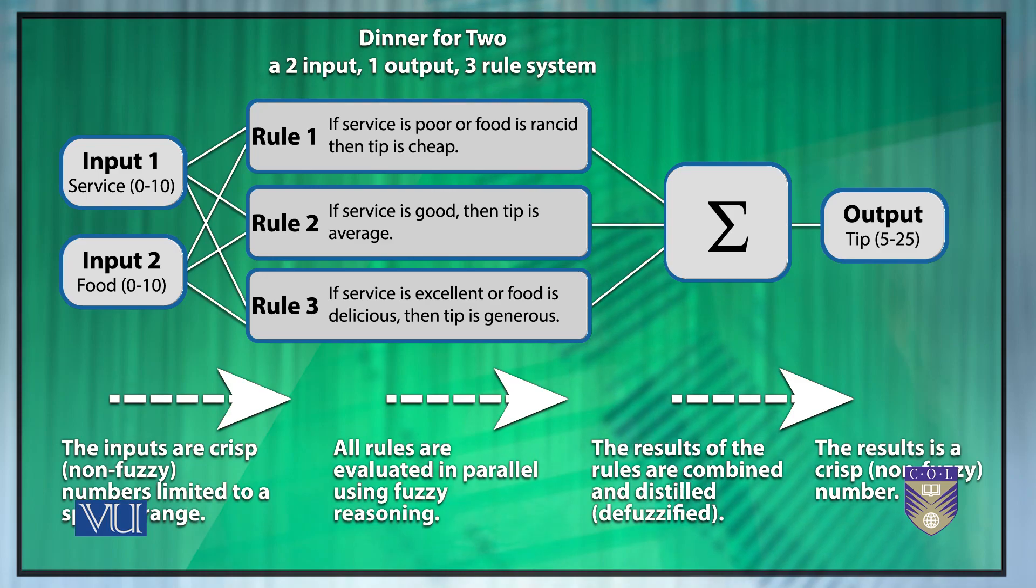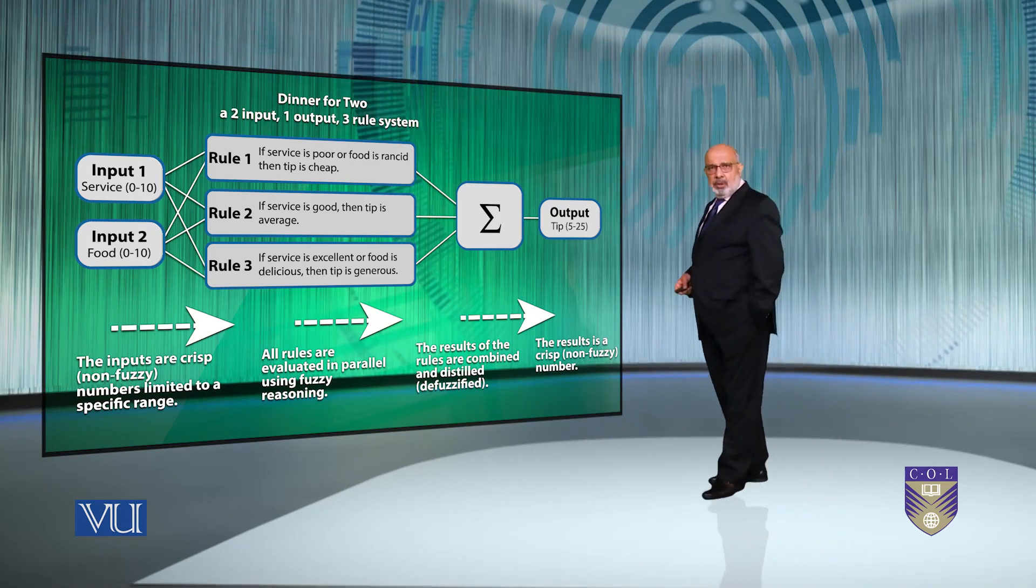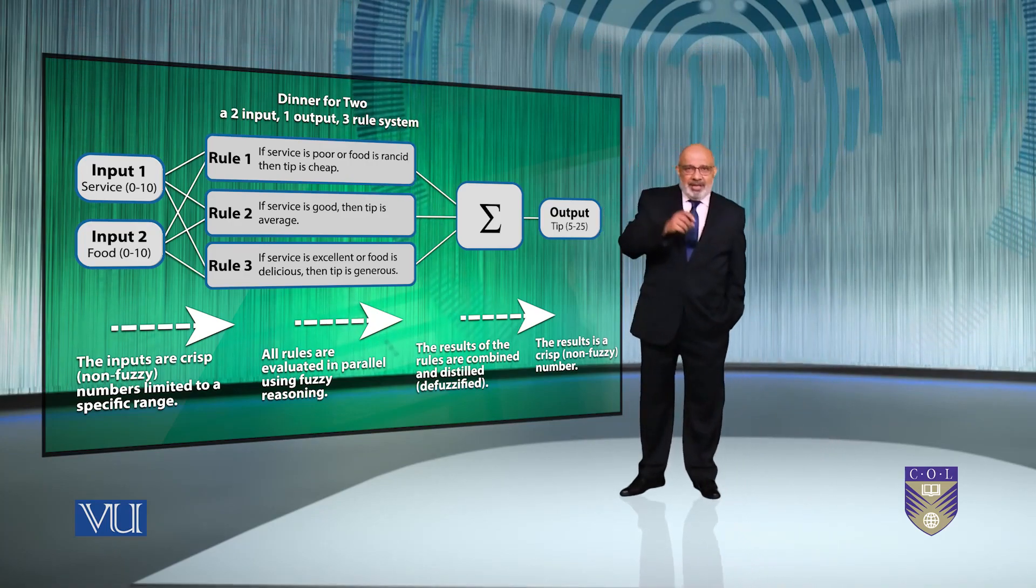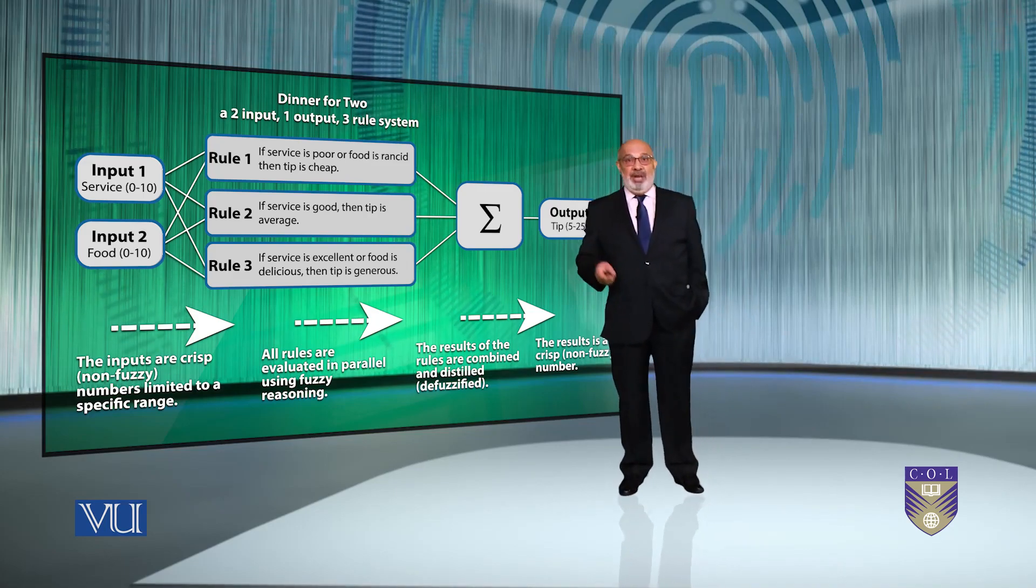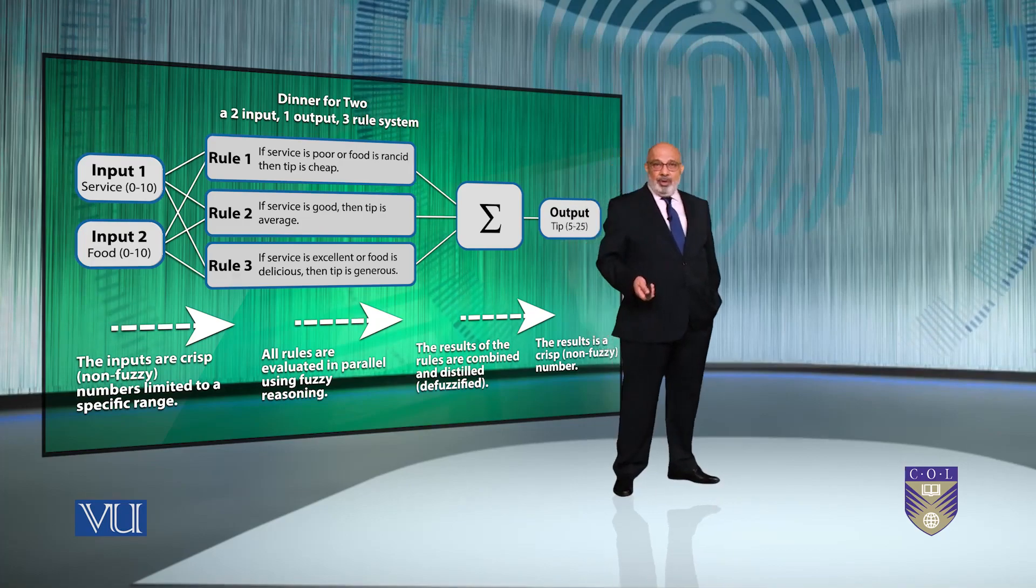Once you are fuzzified, your next step is how to actually apply those rules, the implication. So left-hand side of the rule, which ones, and then the implication of each rule. So for instance, what is the extent to which the food is delicious? And the figure will demonstrate how well the food of our hypothetical restaurant qualifies on a scale of 0 to 10. And the linguistic variable here is the word delicious, the food quality.